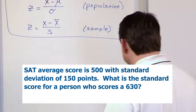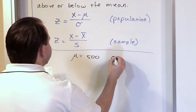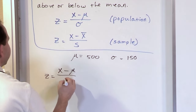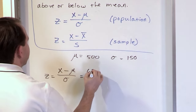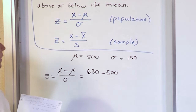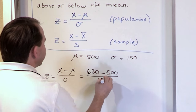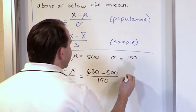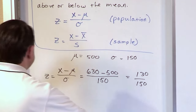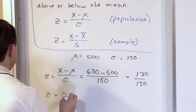In order to do this problem, let's write down what we know. The mean is 500 and the standard deviation is 150. The Z-score is whatever score I got minus the mean, divided by the standard deviation. This person scored 630 on the exam; subtract 500 for the mean. If we stopped the calculation there, this would be how many points above the mean he scored. But we want standard deviations, so we divide by 150. Doing the subtraction gives 130, and on the bottom we have 150, so the Z-score is 130 divided by 150, which equals 0.867.